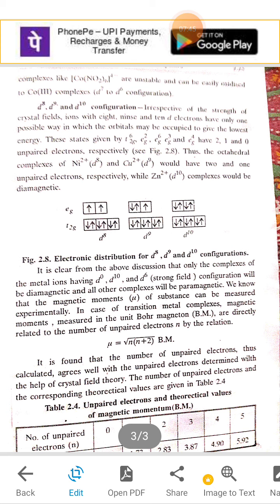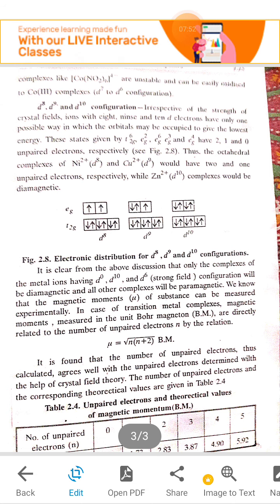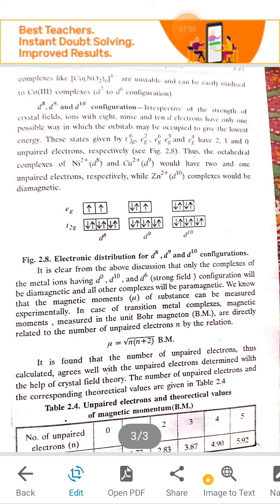When it is 3, mu is 3.87. When it is 4, mu is 4.90. And when it is 5, mu is 5.92.